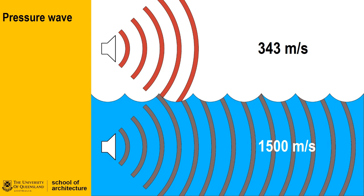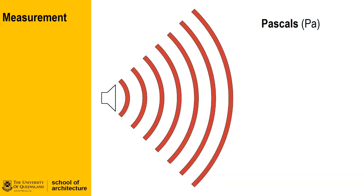For example, sound waves travel through the air at approximately 343 metres per second, but through water they travel up to 1500 metres per second. The basic measurement of sound pressure is the difference in pressure between the sound wave and the ambient pressure of the medium that the sound wave is passing through. It is not a measure of the perceived intensity of the sound.